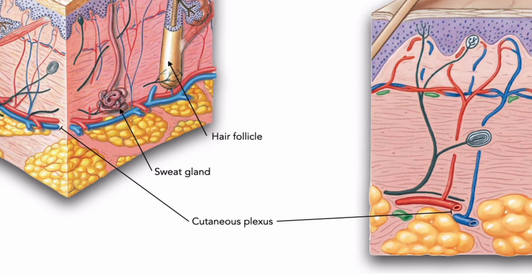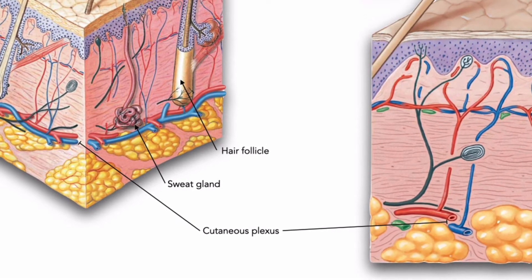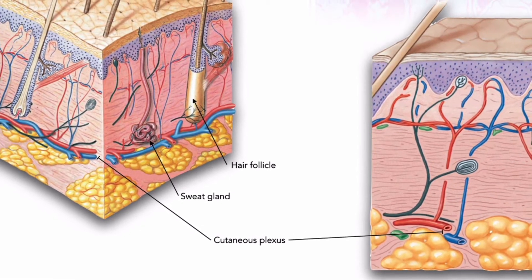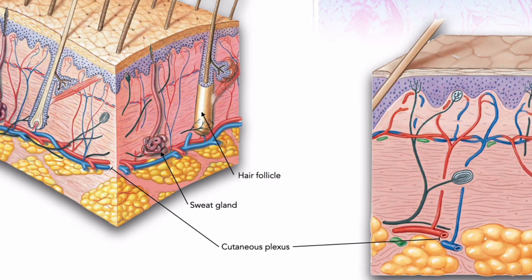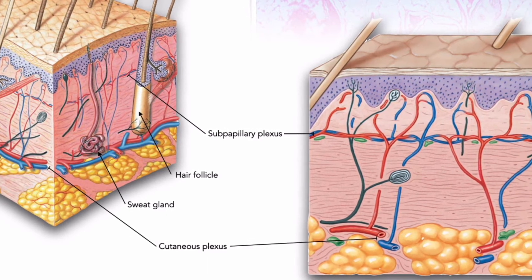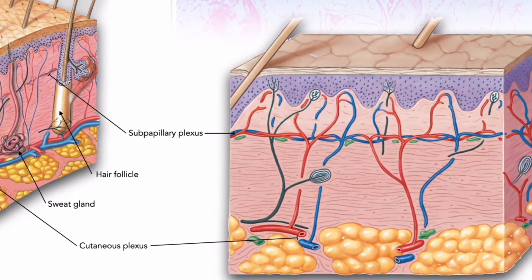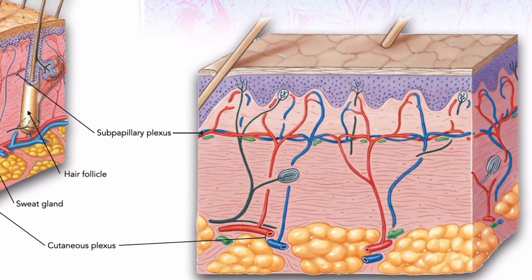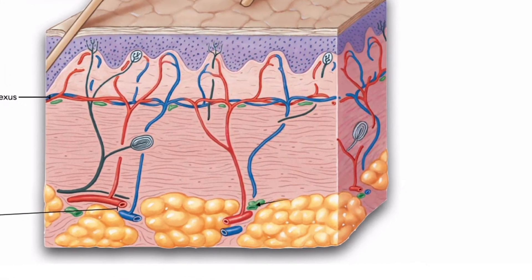Branches of the cutaneous plexus supply both adipose tissue in the hypodermis below and the tissues of the integument above. As small arteries travel toward the epidermis, branches supply the hair follicles, sweat glands, and other structures in the dermis. Upon reaching the papillary layer, the small arteries form another network called the sub-papillary plexus, providing blood to capillary loops that follow the contours of the epidermis-dermis boundary. Here, nutrients and oxygen are exchanged for carbon dioxide and waste products, draining into veins of the cutaneous plexus.